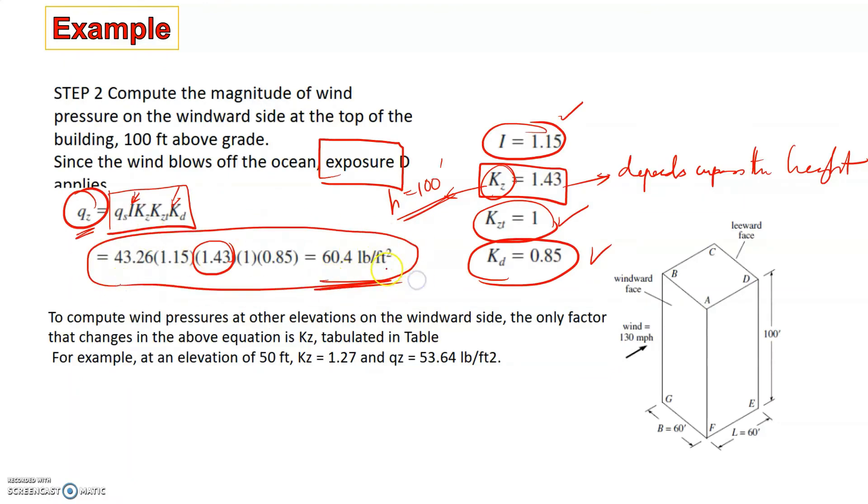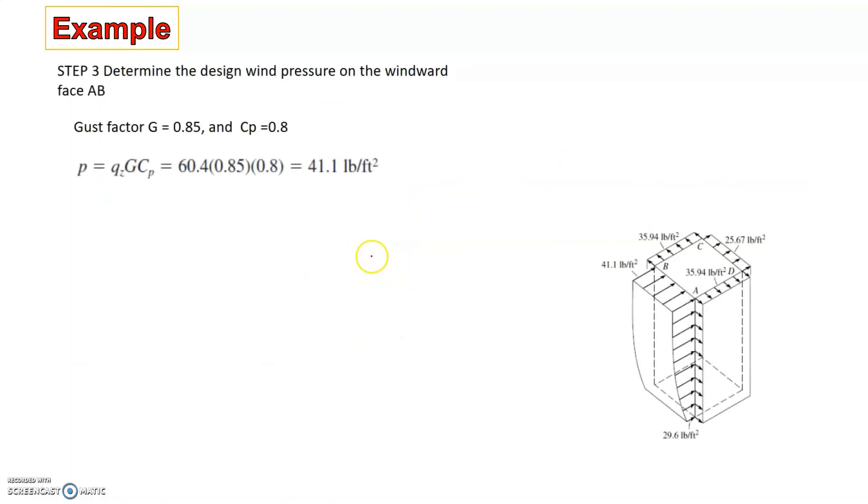The third step involves the calculation of the design wind pressure P acting on face AB. Face AB is the windward side, or the side on which the wind acts. The gust factor is G, and as I told earlier, Cp is 0.8. When we substitute all of this, we get the value of P as 41.1.